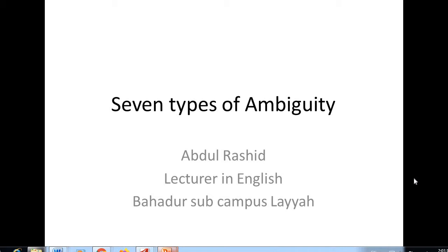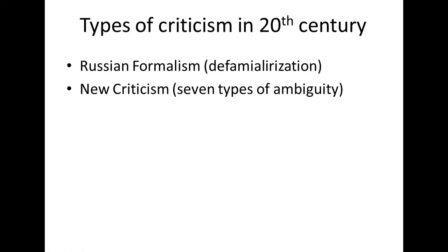This is a 20th century criticism. Before proceeding about the seven types of ambiguity, we would be discussing the two major literary movements of criticism which have been evident in the 20th century. One was Russian Formalism and the second was New Criticism. It is usually asked: what is the difference between Russian Formalism and New Criticism? We have to make it clear in our mind that these are basically two names of the same movement.